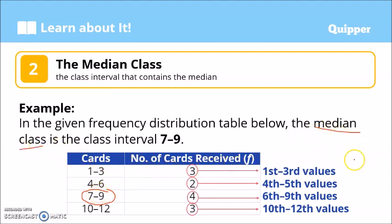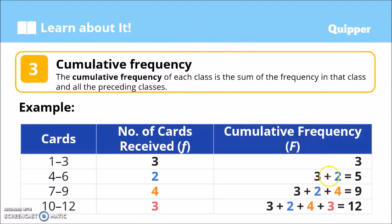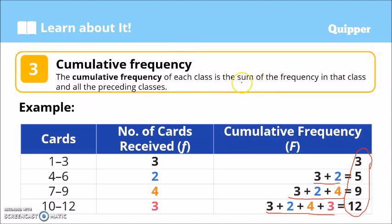There is actually a shorter way to determine the median class of grouped data, and we'll see that without going through this whole process. First, we need to construct the cumulative frequency column. You don't have to do this formally — you can do it in your mind or on scratch paper. All we need are these values. The cumulative frequency of each class is the sum of the frequency in that class and all the preceding classes, starting from the lowest class interval.